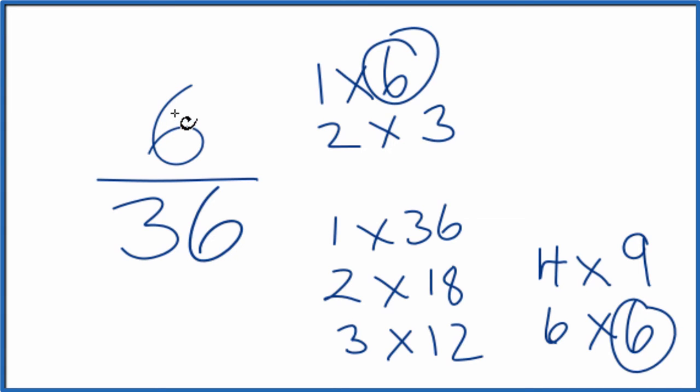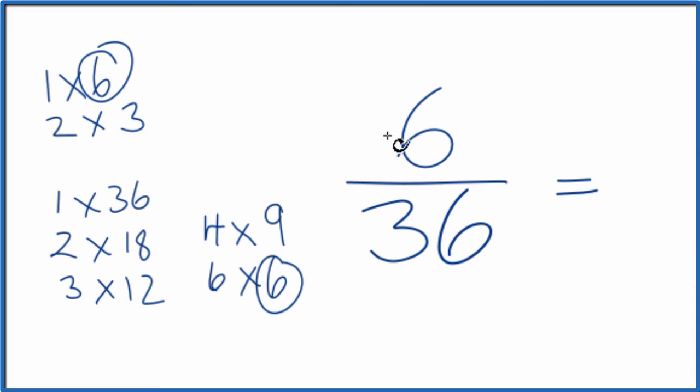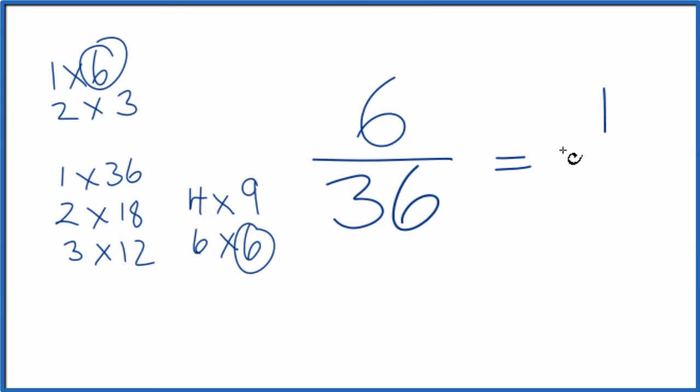So we're going to divide the top by 6, the bottom by 6, and we'll have reduced or simplified 6/36. Let's move this over here. So we divide 6 by 6, that gives us 1, and then 36 divided by 6 gives us 6.